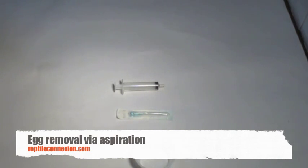This is just a quick video on how to remove an egg from a gravid female. This is an aspiration technique. Primarily, we're going to remove the egg yolk from the egg with a syringe and allow the female to naturally remove the egg by herself.